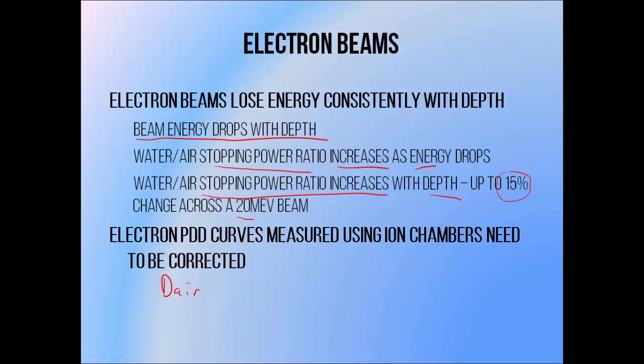This means that dose-to-air, or the ionization that we measure when measuring a percentage depth-dose curve, varies at a different rate with depth to dose-to-water, which we are attempting to derive from our measured depth ionization curve. So we need to correct for these differences in order to obtain a PDD curve that reflects dose-to-water.